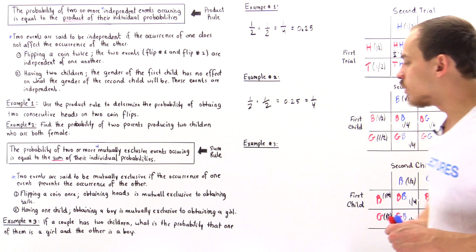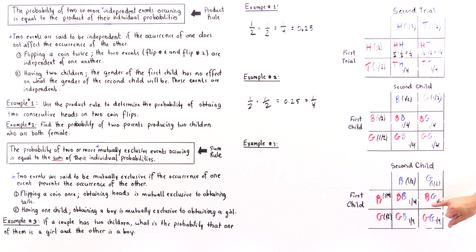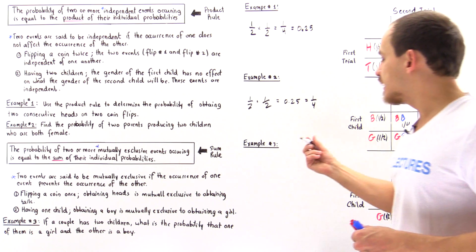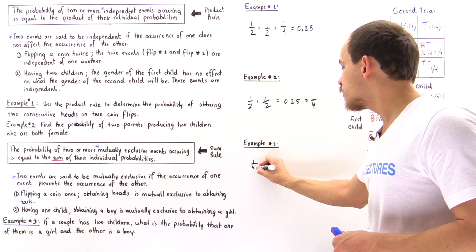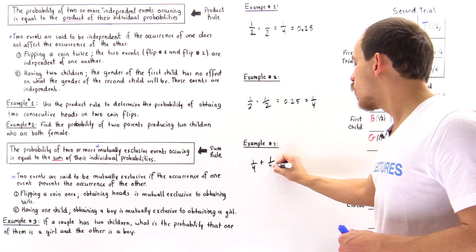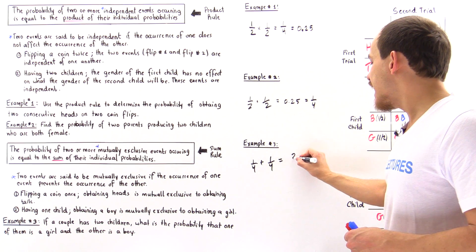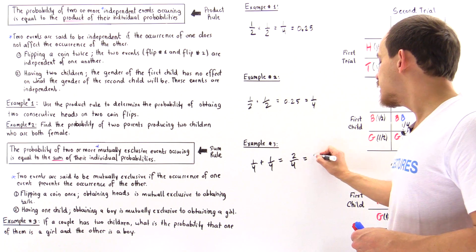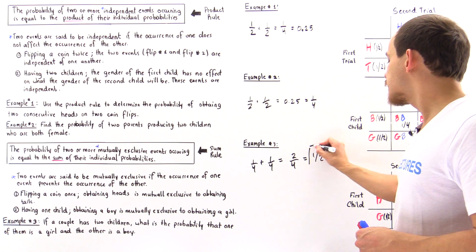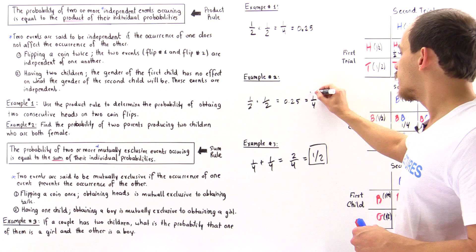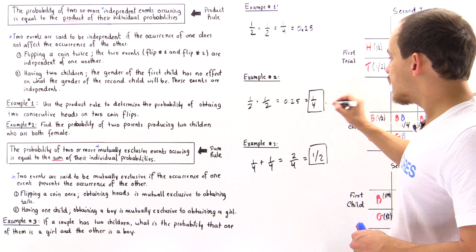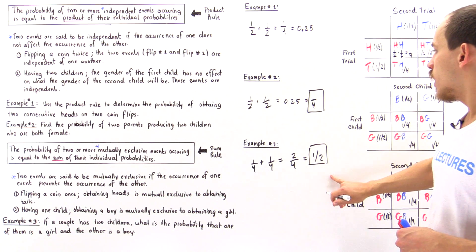we apply the sum rule and we have one-fourth plus one-fourth, and that gives us one-half. So one-fourth plus one-fourth gives us two-fourths, which is equal to one-half or 50%. So this is the probability of getting one girl and one boy.